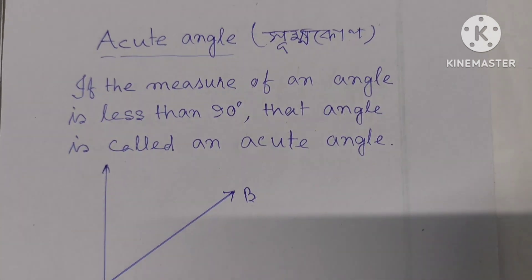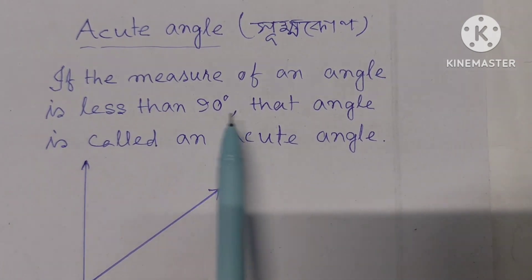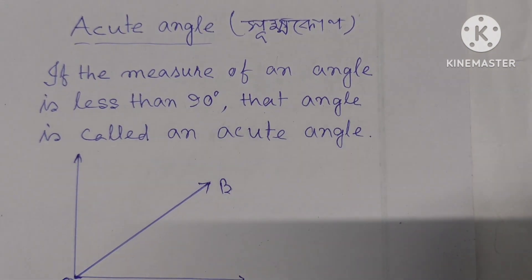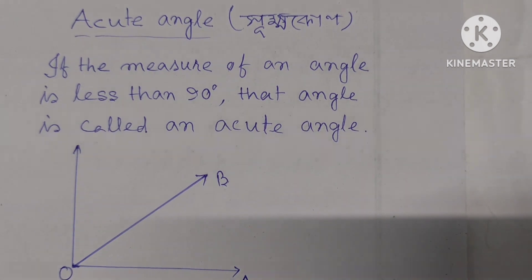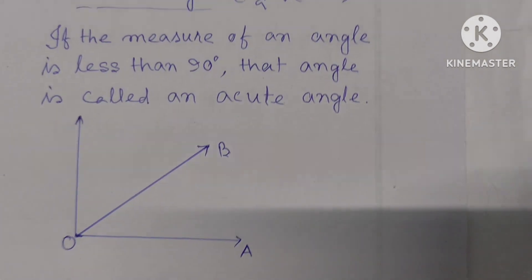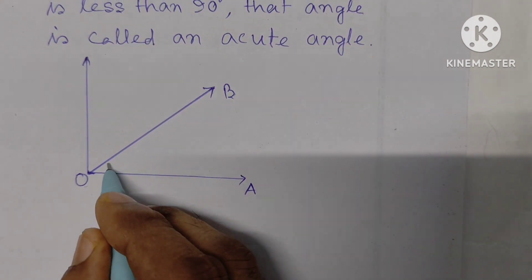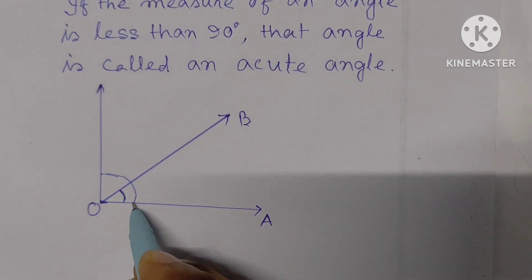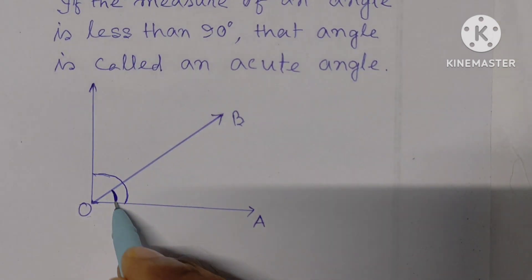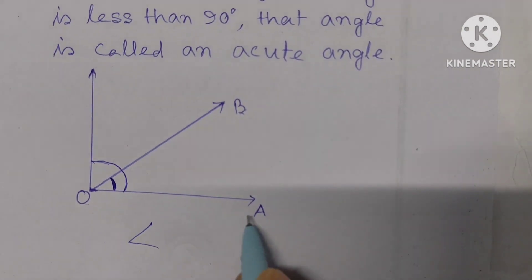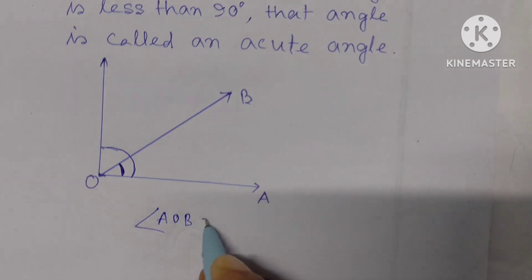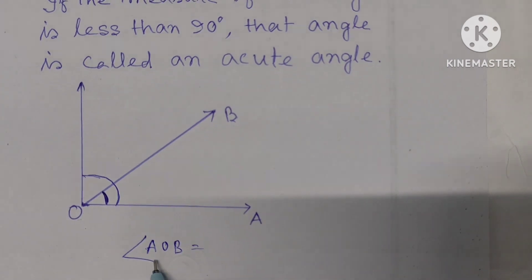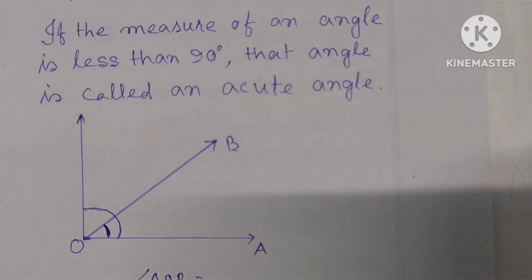If the measure of an angle is less than 90 degrees, that angle is called an acute angle. Angle AOB is an acute angle.